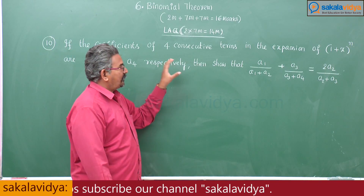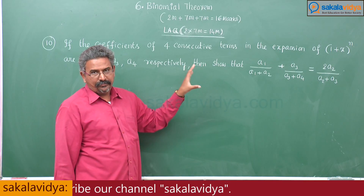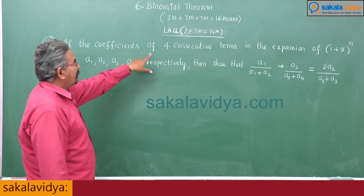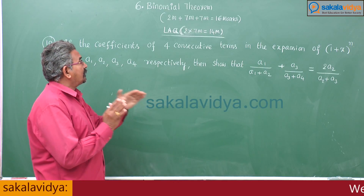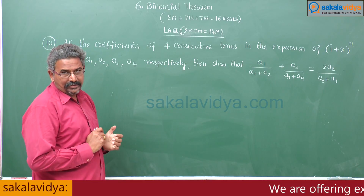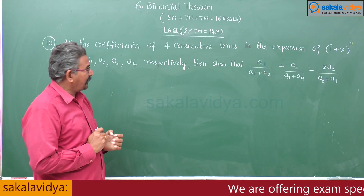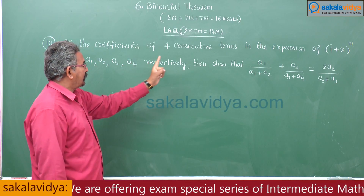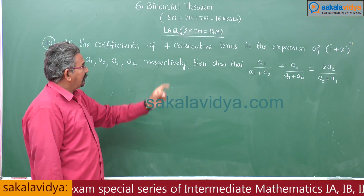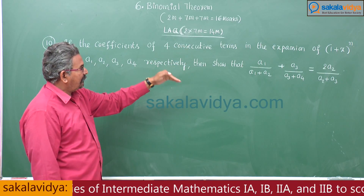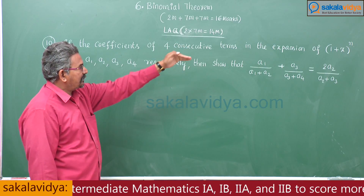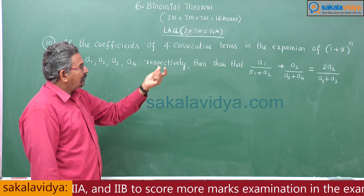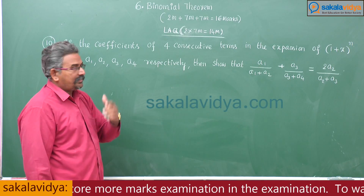This is a very important problem. If the coefficients of four consecutive terms in the expansion of (1 + x) to the power of n are a1, a2, a3, a4 respectively, then show that a1/(a1 + a2) + a3/(a3 + a4) is equal to 2a2/(a2 + a3).